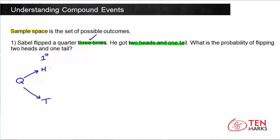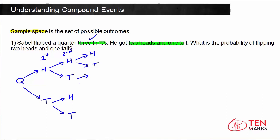Now if you flip this coin again — if you got heads the first time, the next possible outcomes are heads or tails. And if you got tails the first time and you flip again, you can get heads or tails. So this is the second toss. Now let's go through to the third toss. Again, if you flip, you can have heads or tails. If you got tails in the second trial and you flip again, you can have heads or tails, and the same thing keeps happening — heads or tails.